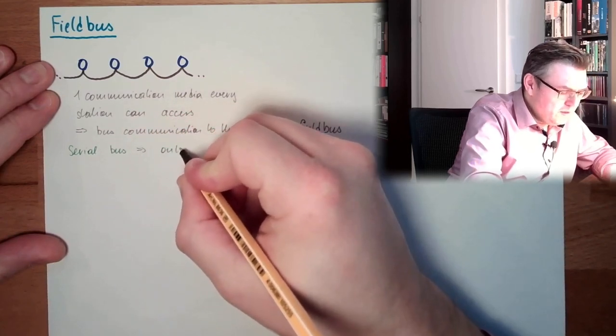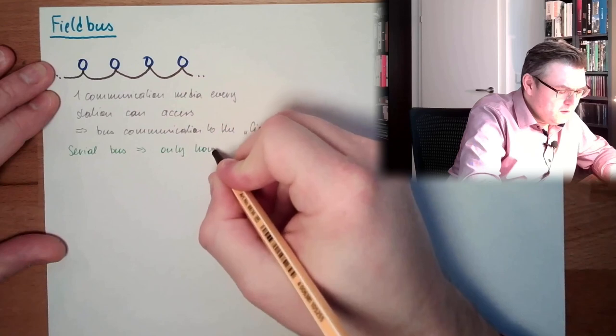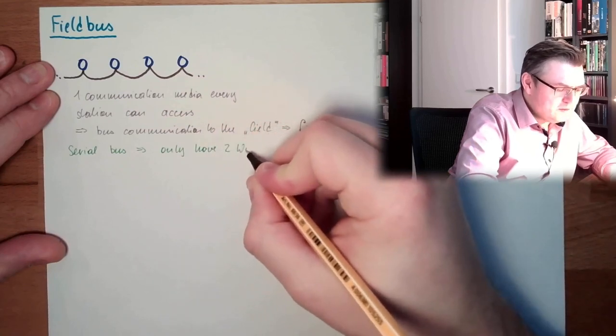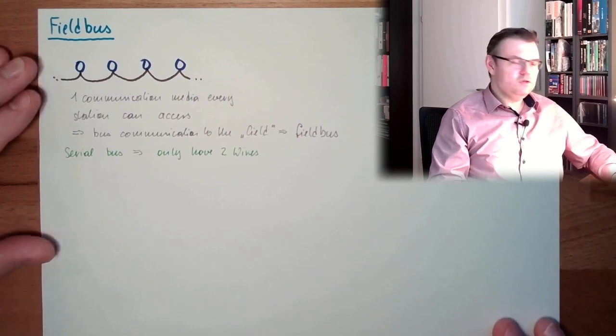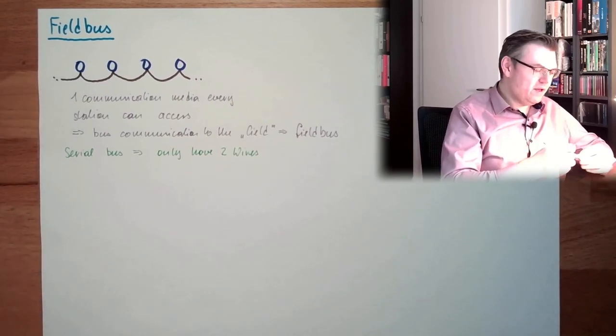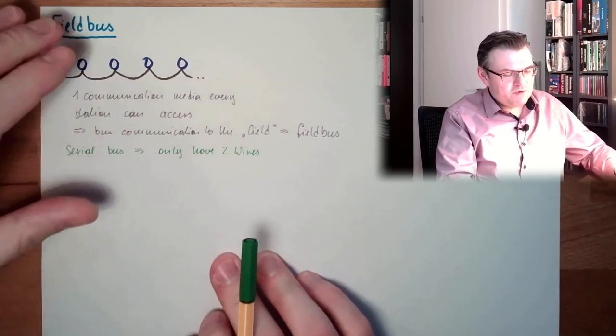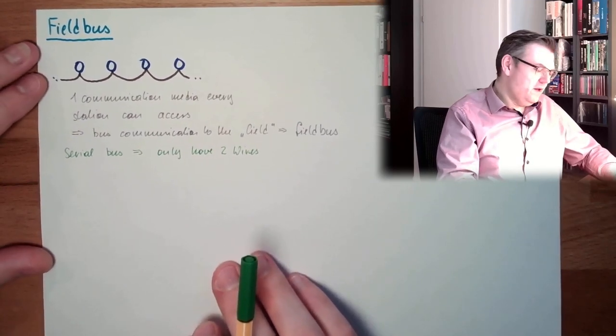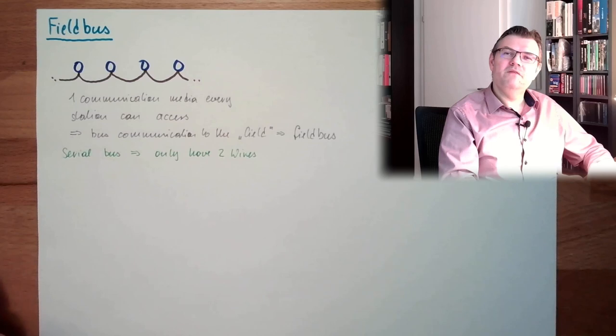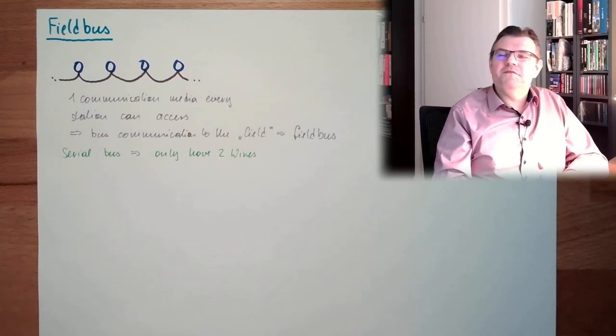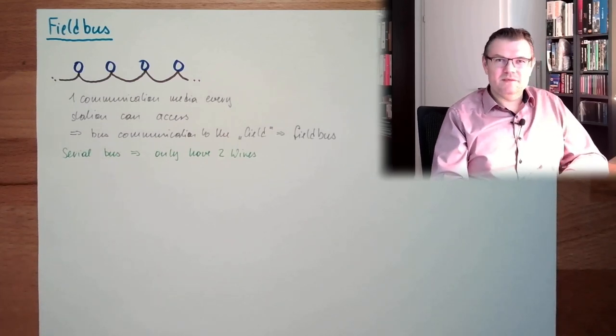So we only have two wires. This is a typical field bus application. Two wires going somewhere, connecting every station to each other. And that's it. This is a serial field bus. All of the field buses are serial field buses.